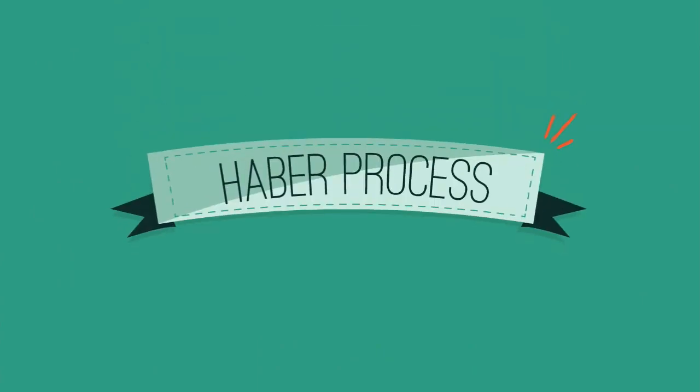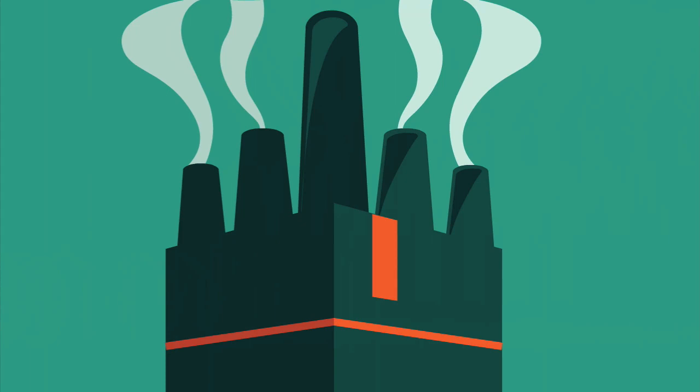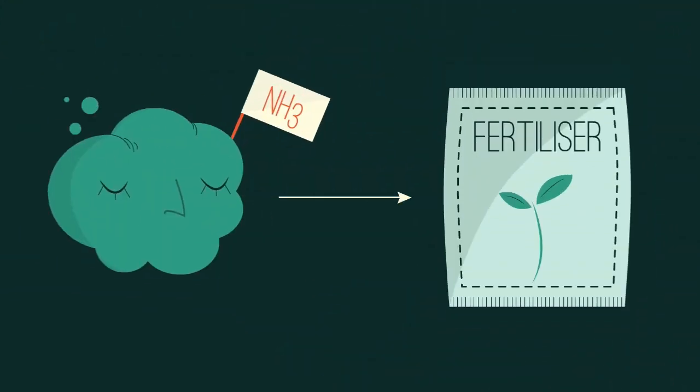The Haber process has enabled ammonia to be produced on an industrial scale. Ammonia, as we know, can be used to make fertilizers.